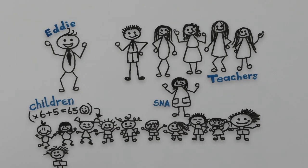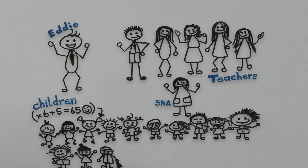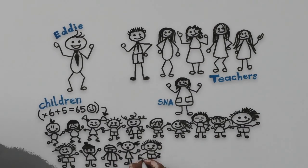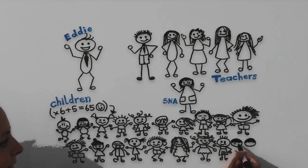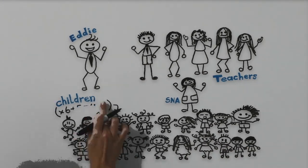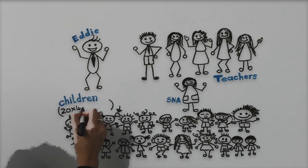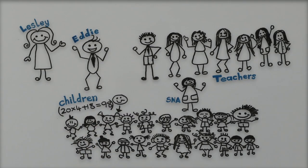News spread fast about this new Educate Together school. By October 2008, there were 80 students, seven teachers, and our secretary Leslie. By June of the first year, the student population had grown to 98.